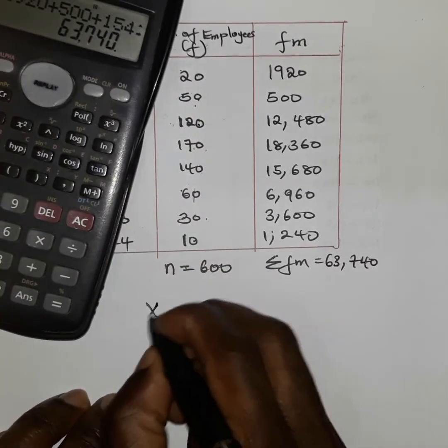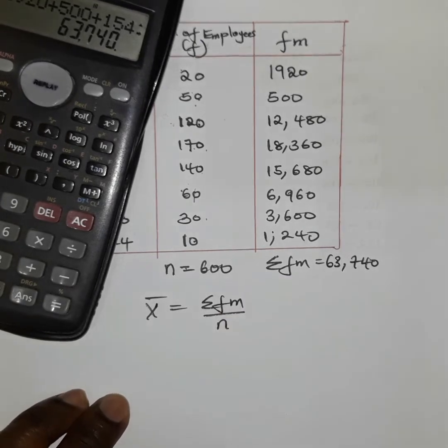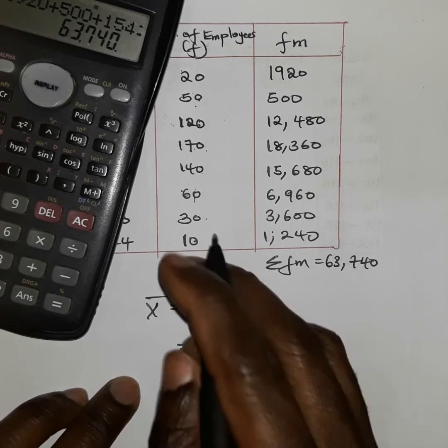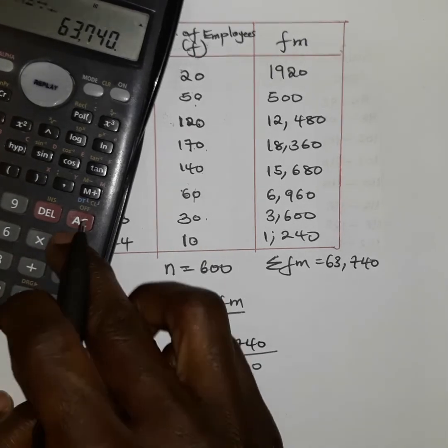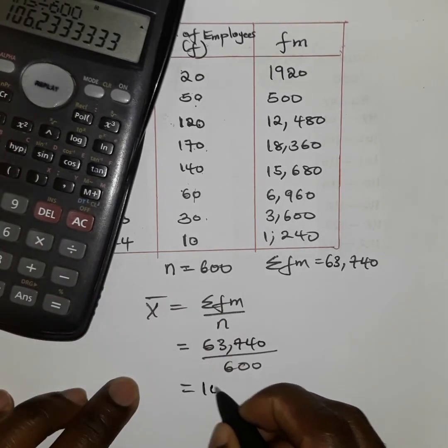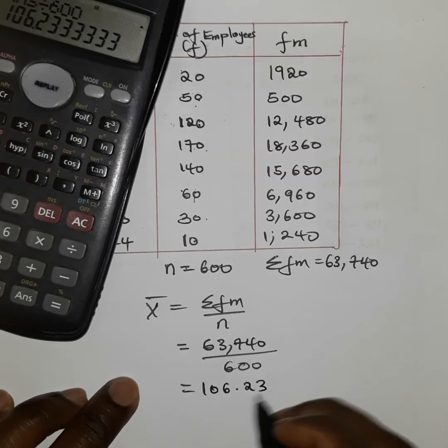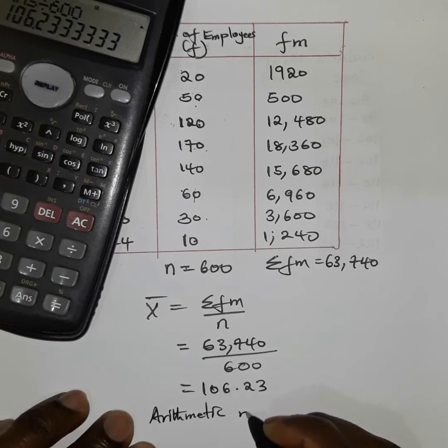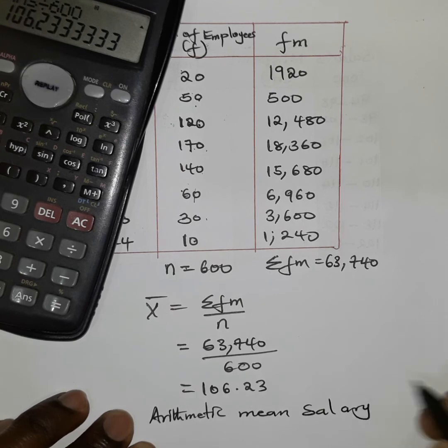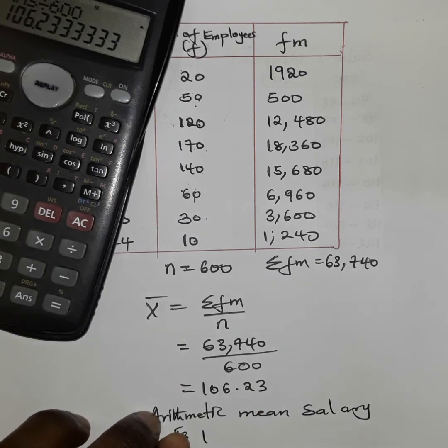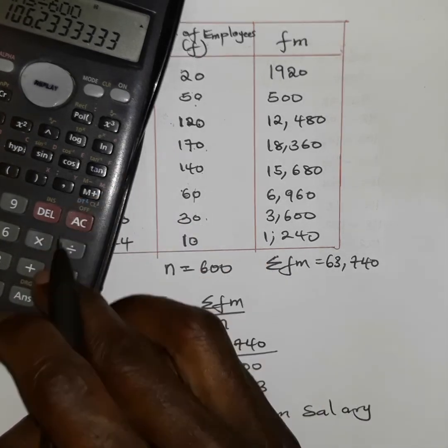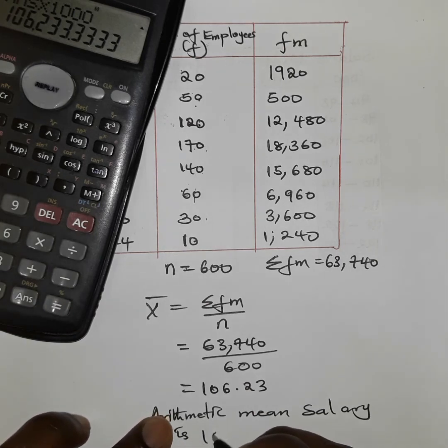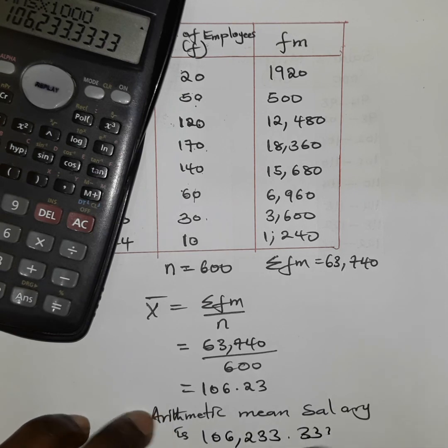For us to get our mean, we said it's the summation of fm divided by n, which is the number of frequencies. So 63,740 divided by 600, we get a value of 106.23. We approximate, so our arithmetic mean salary - it was in terms of thousands - so we multiply by a thousand shillings. We should have 106,233.33 shillings.